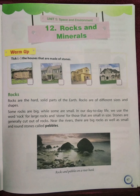Good morning children. Today we will learn about chapter number 12, that is rocks and minerals. At first we will learn about rocks, which are very hard solid parts of the earth. Rocks are of different sizes and shapes. Some rocks are big and some are small. In our day to day life we use the word rocks for large rocks and stone for those that are small in size. Stones are generally cut out of rocks. Near the rivers there are big rocks as well as small and round stones called pebbles. In short, small pieces of rocks are called pebbles.